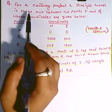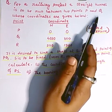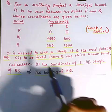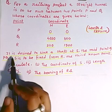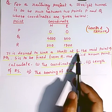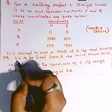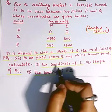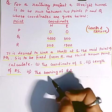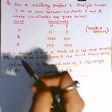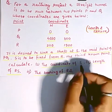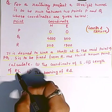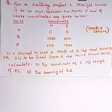So let's start. Here I have a question: for a railway project, a straight tunnel is to be run between two points P and Q whose coordinates are given. R is a known station whose coordinates are also given. It is desired to sink a shaft at S, the midpoint of P and Q. S is to be fixed from R, the third known point. Calculate the coordinate of S, length of RS, and bearing of RS.